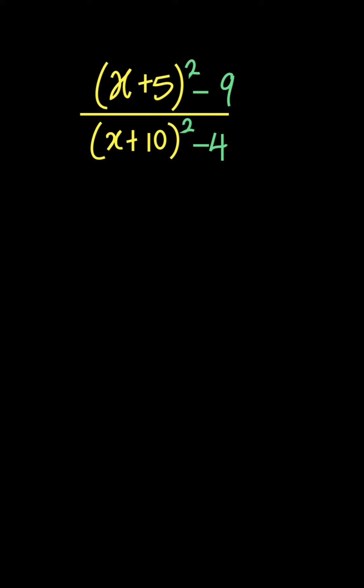So we have (2x+5)² - 9 all over (x+10)² - 4 and we want to simplify this.